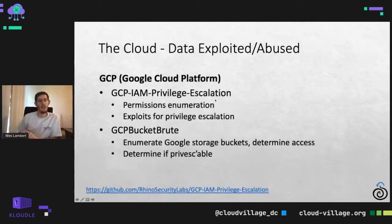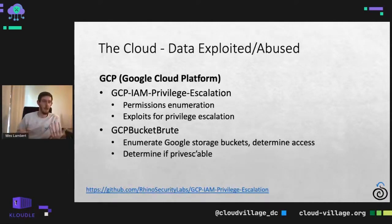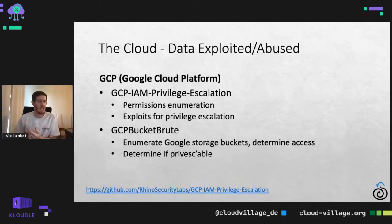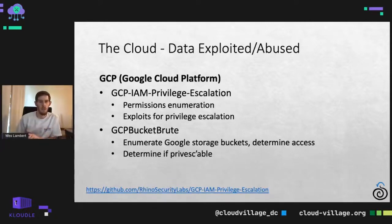For GCP, GCP IAM Privilege Escalation by Rhino Security Labs is great for things like permissions enumeration, also looking for that privilege escalation moment, enumerating those cloud buckets, determining what access is there, and determining the best place to get a foothold in that infrastructure and pivot from there into more sensitive components or something more valuable.